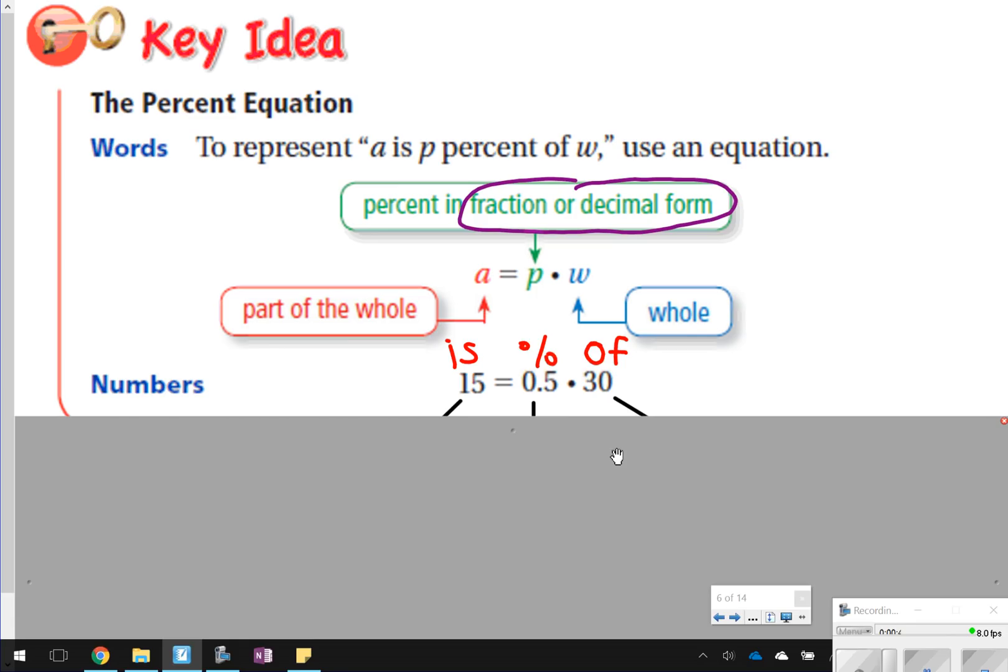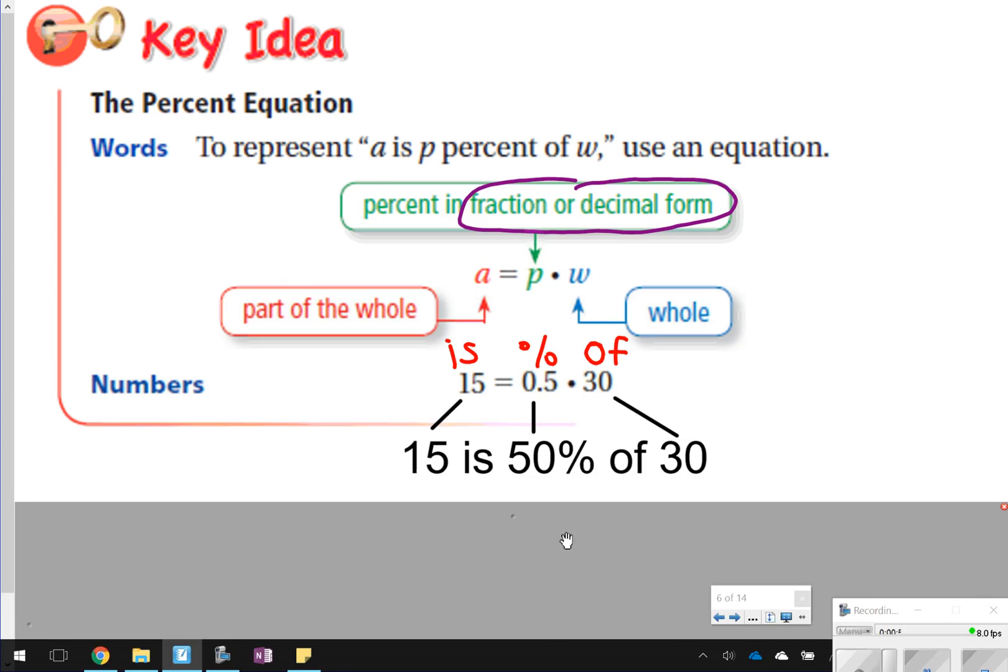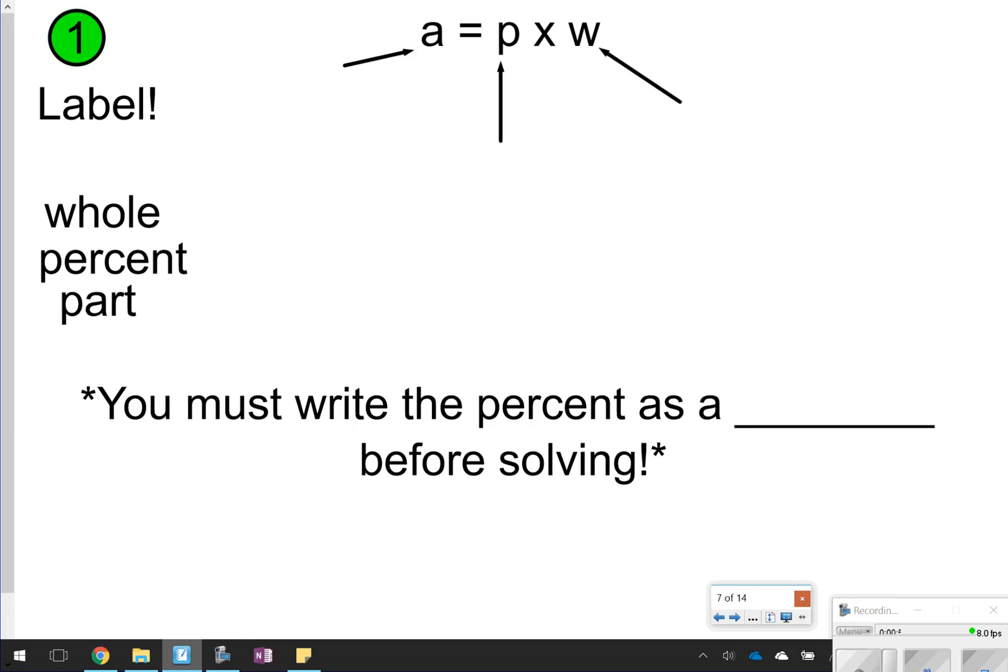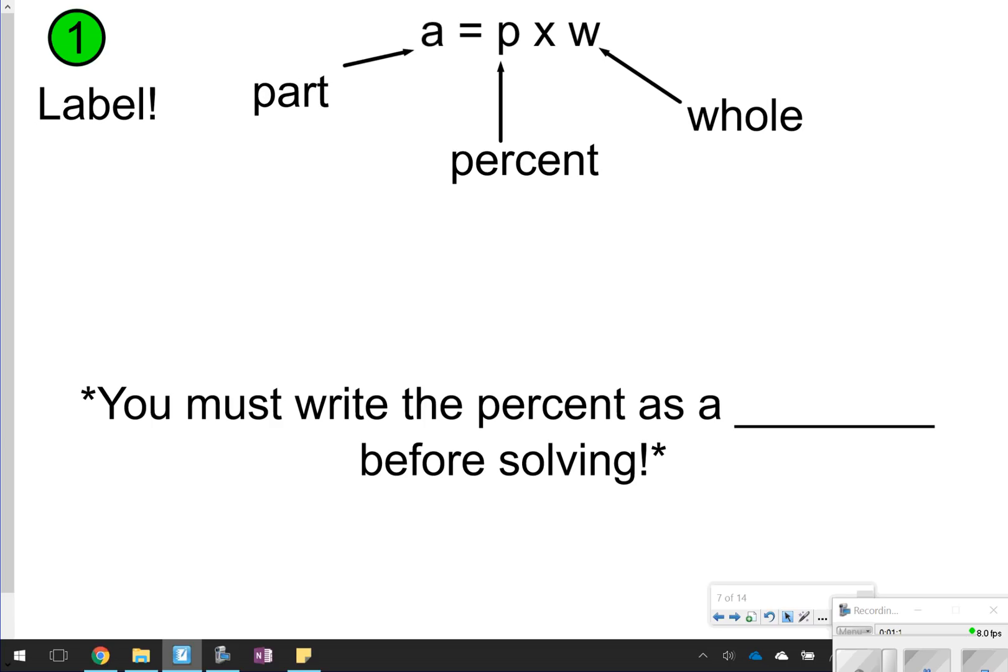If we were trying to figure out 50% of 30, we would be changing 50% to 0.5, multiplying it by 30, and then it's equal to 15. What I would like for you to copy down is this part right here, and we're going to label each part. W represents the whole thing, P represents percent, and A represents part.